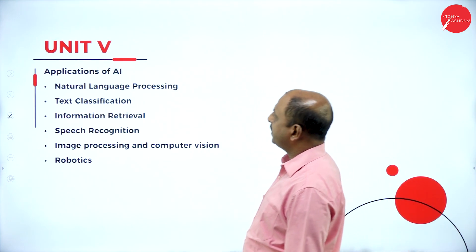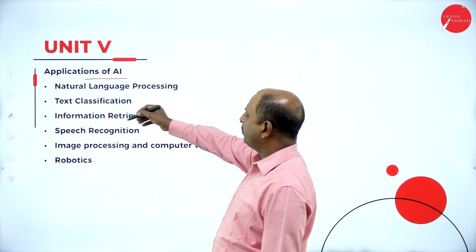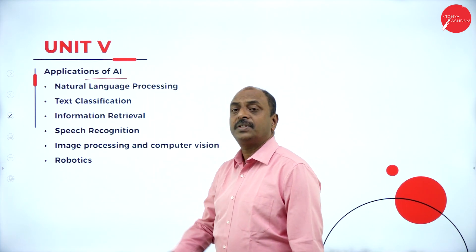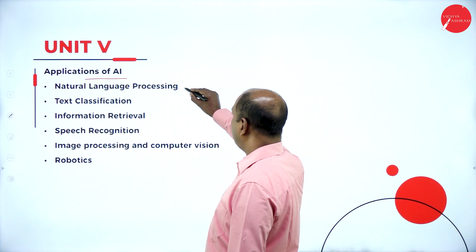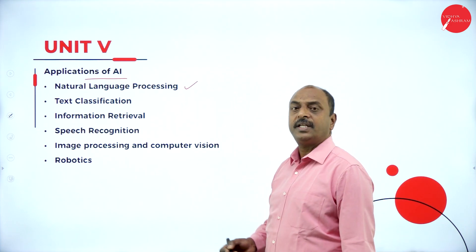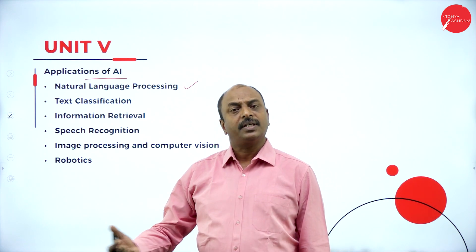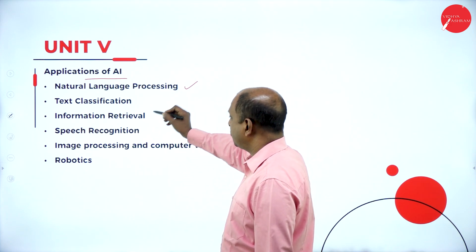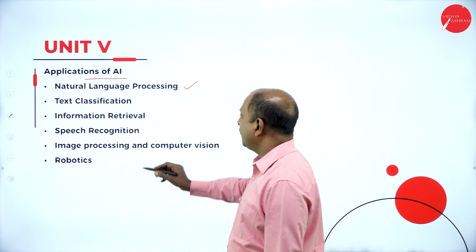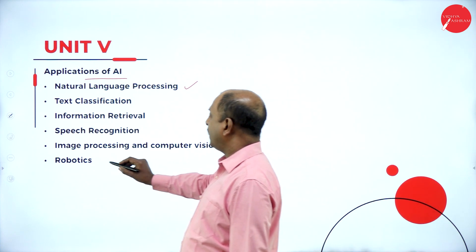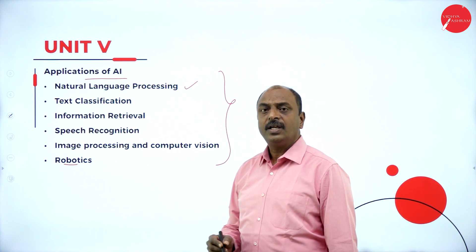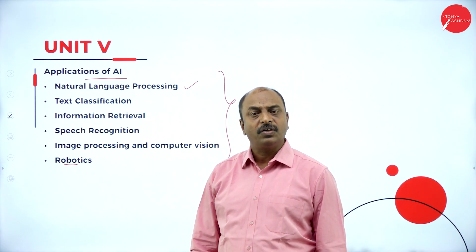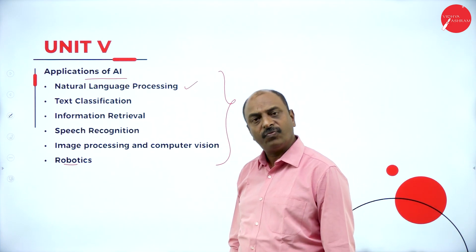In Unit 5, this is Applications of AI. We will discuss different applications we encounter in day-to-day life with examples. These include NLP (natural language processing), used for translation between languages; text classification; information retrieval; speech recognition; image processing; computer vision; and robotics. We will learn their definitions with different examples.